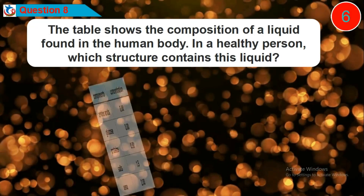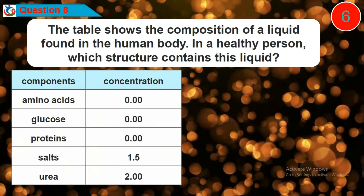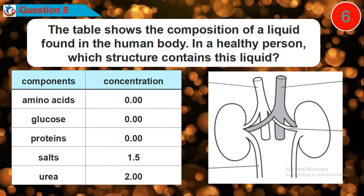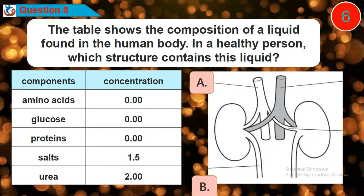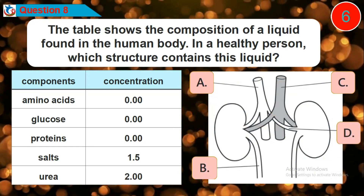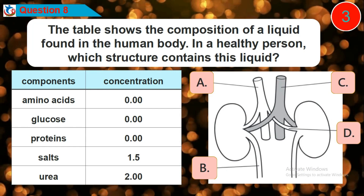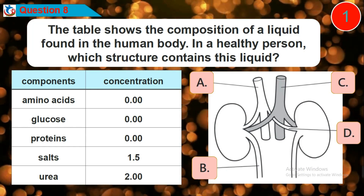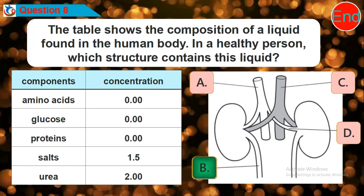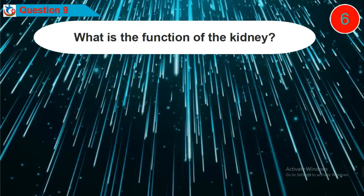Question 8: The table shows the composition of a liquid found in the human body. In a healthy person, which structure contains this liquid? Is it option A, B, C, or D?